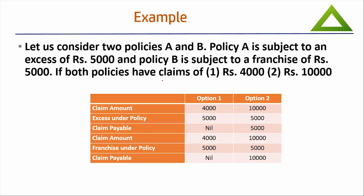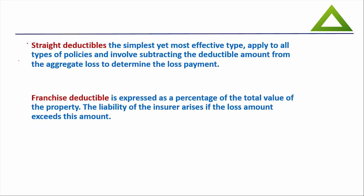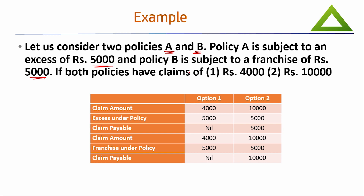Now here is the example. Two types of deductibles — first is excess or straight deductible, another is franchise. Let us consider two policies, A and B. Policy A is subject to an excess of 5000, whereas policy B is subject to a franchise of 5000. Keep on referring to the example while considering the theory element.